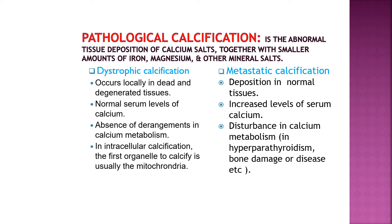Moving to the topic of pathological calcification — it is the abnormal tissue deposition of calcium salts together with smaller amounts of iron, magnesium, and other mineral salts. There are two types: dystrophic calcification and metastatic calcification.